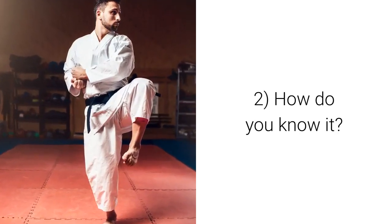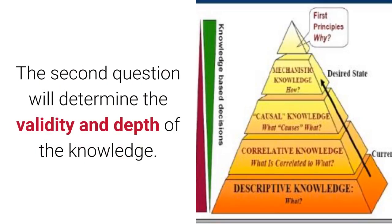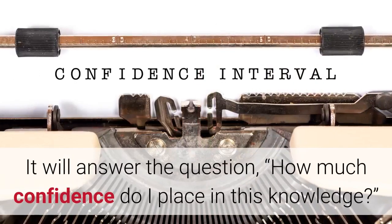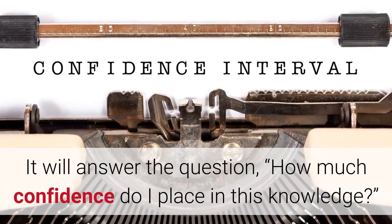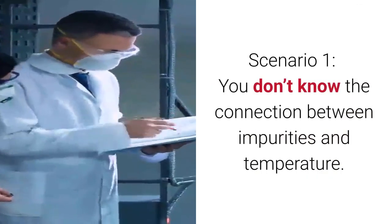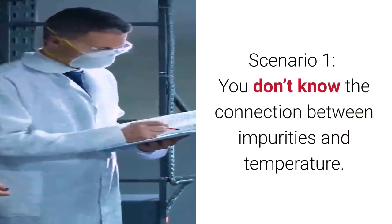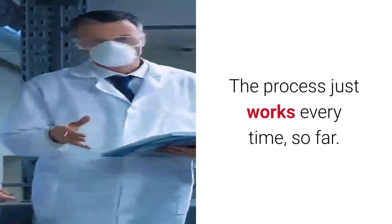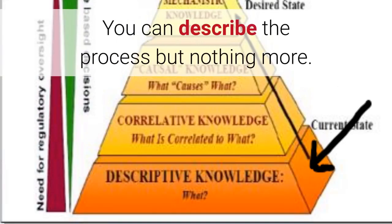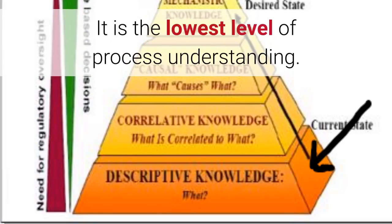Two: how do you know it? The second question will determine the validity and depth of the knowledge. It will answer the question: how much confidence do I place in this knowledge? Scenario one — you don't know the connection between impurities and temperature. The process just works every time, so far. You can describe the process but nothing more. It is the lowest level of process understanding.